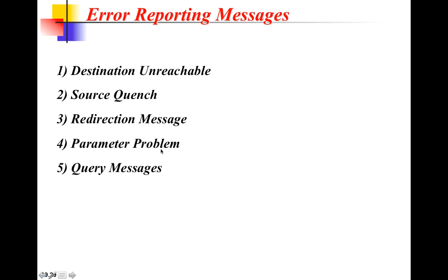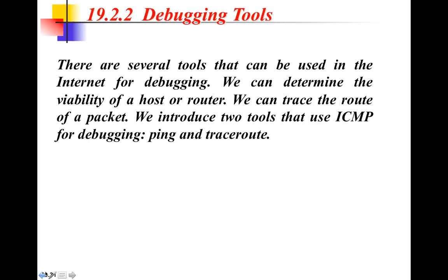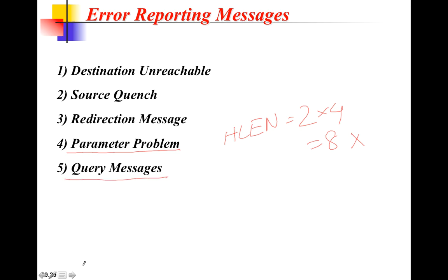Parameter problem: as seen in previous IP packet examples, if the header length was less than 20 or had an invalid value - for instance a header length of 2 which computes to 8 bytes - the packet would be discarded. When it discards a packet due to such problems, it will report a parameter problem ICMP message.